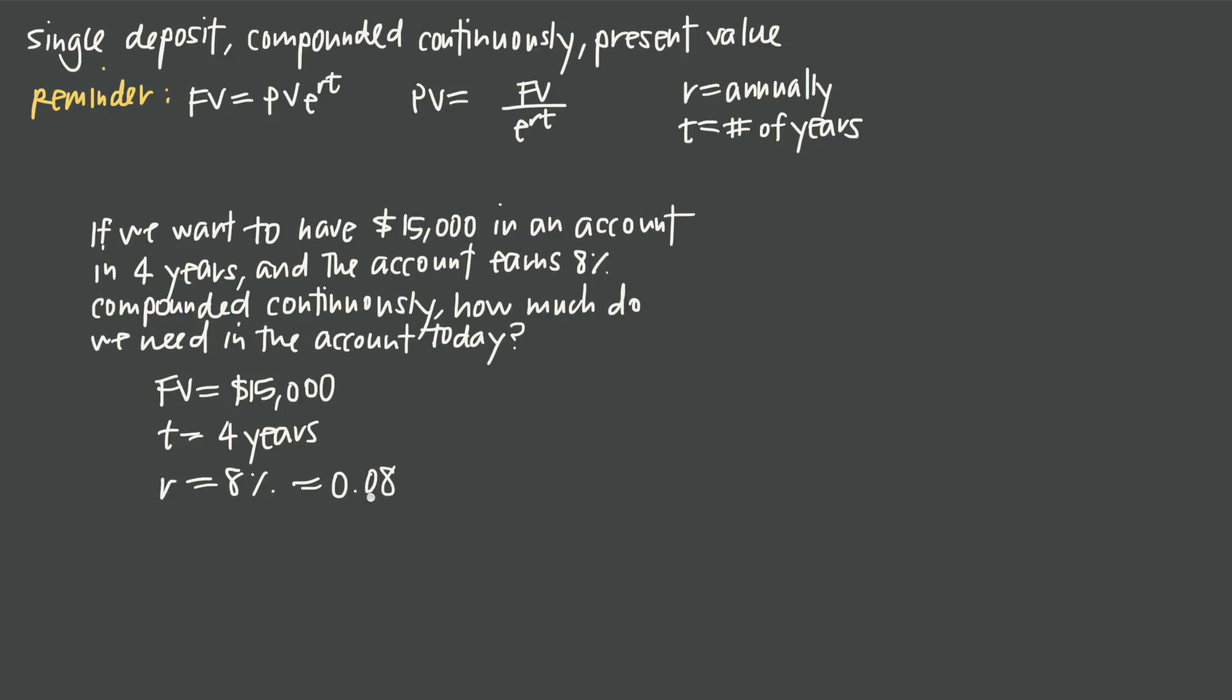Well 8% as a decimal is 0.08. Be careful not to use 0.8, which is 80%. So r is going to be 0.08 and we're compounding continuously, which confirms we need to use these formulas that include the exponential number e. What we're trying to solve for is present value.